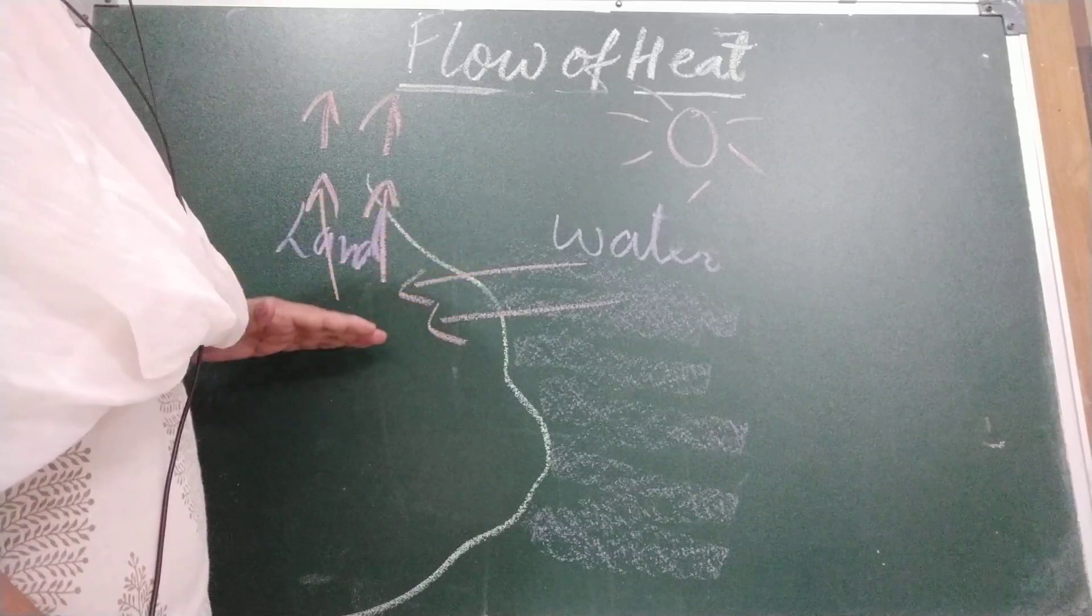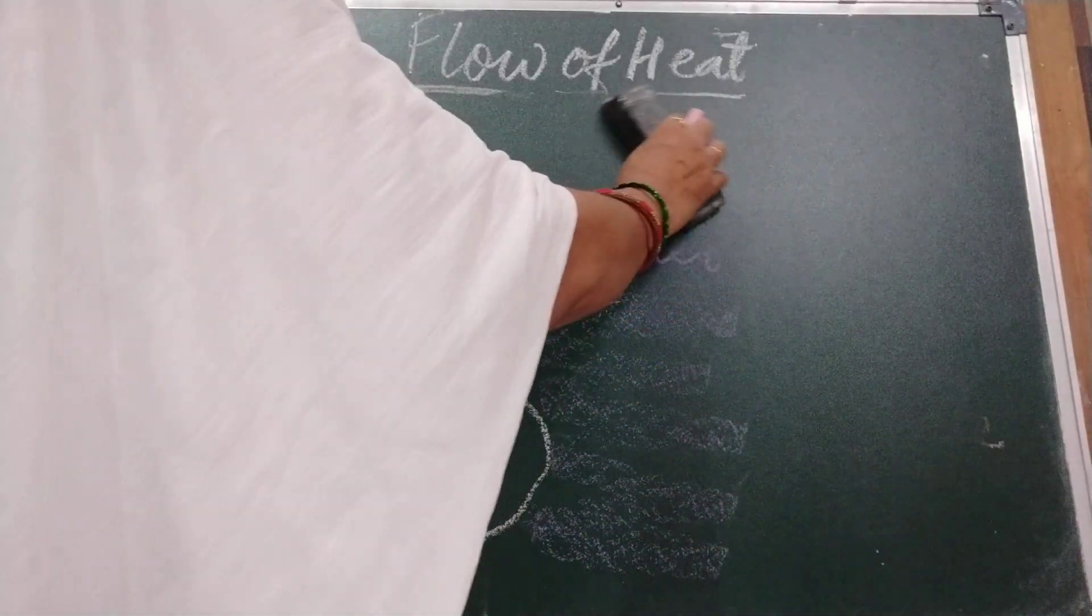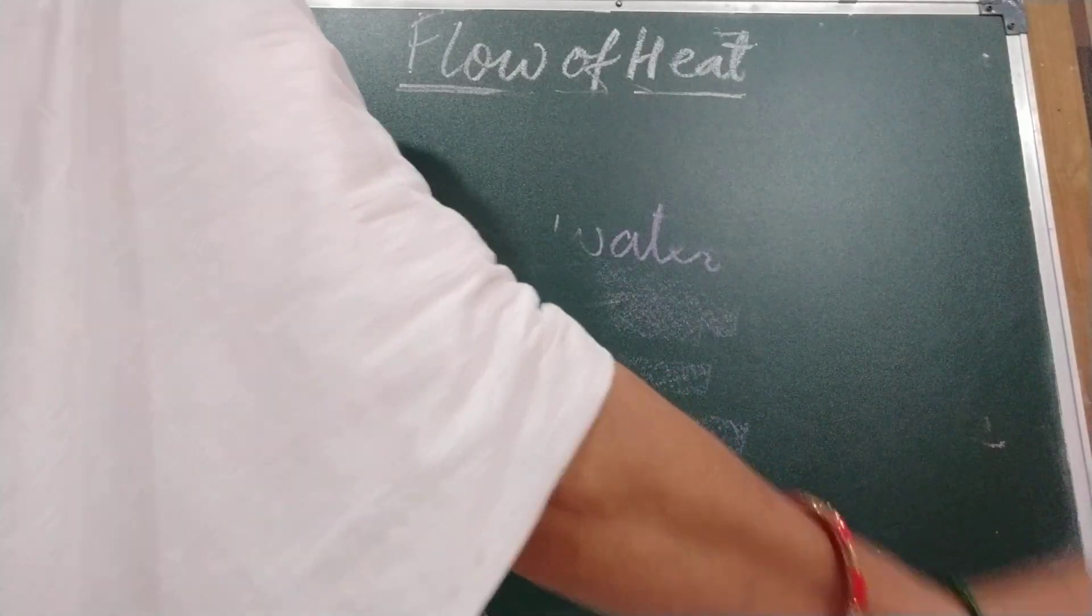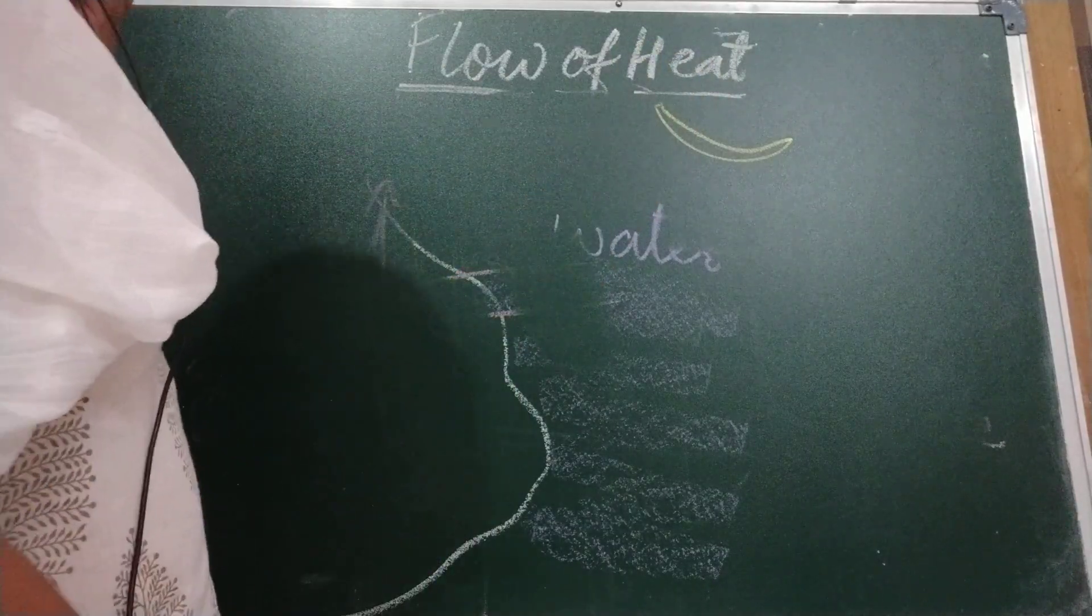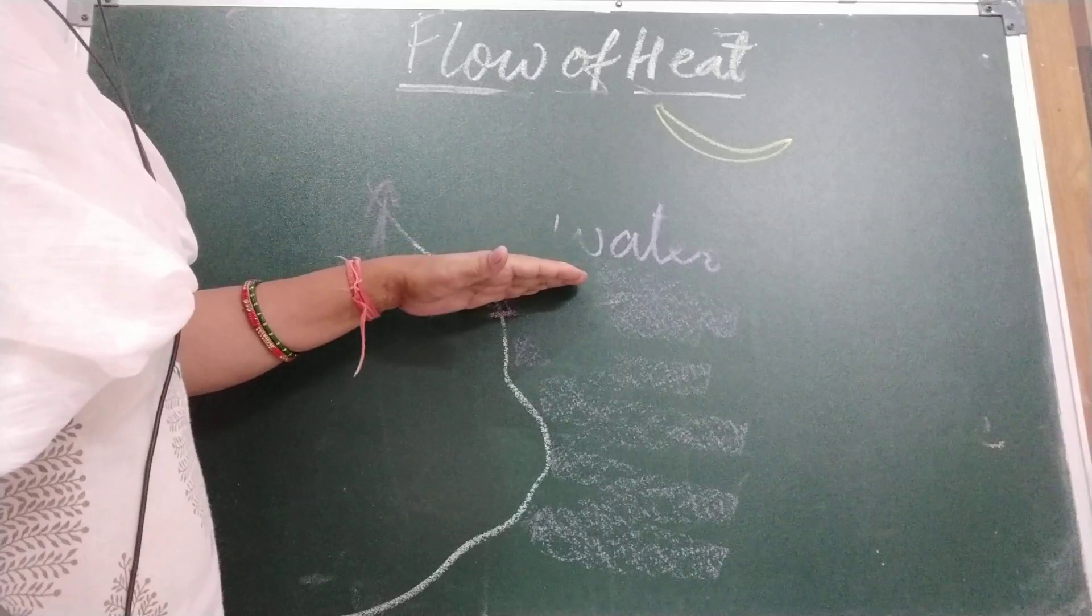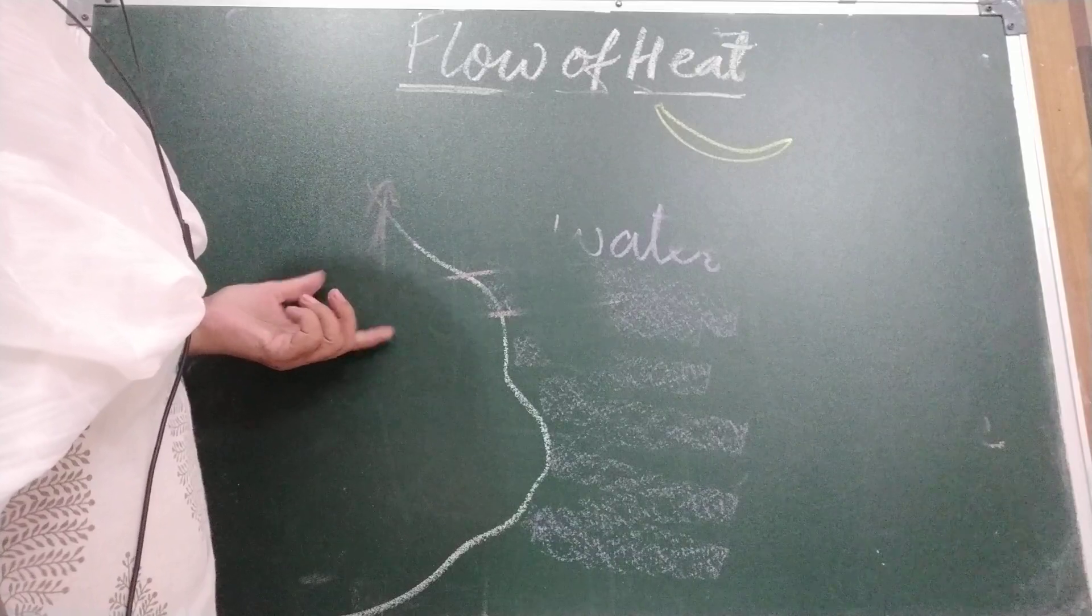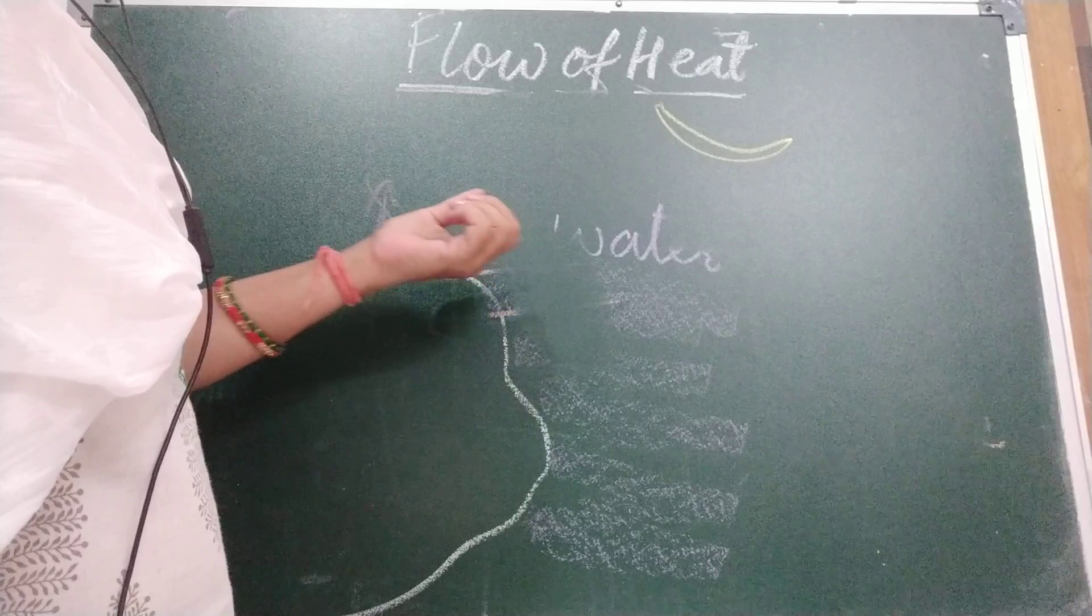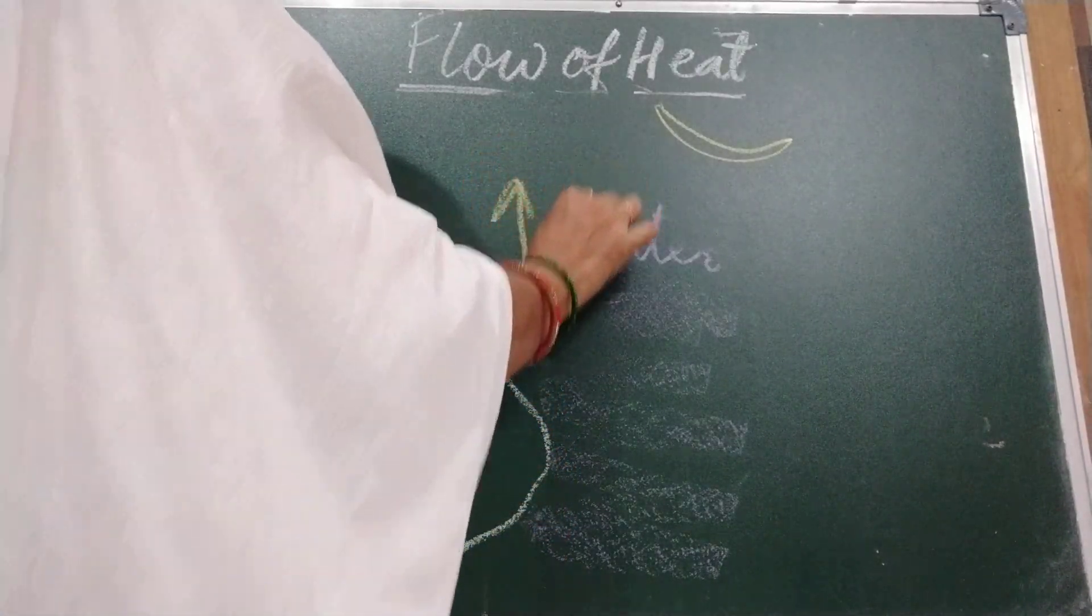Therefore, a sea breeze blows during the day. Now come to the night. When the sun is not there, what happened? Moon is there. During the night, the land loses heat faster than water. As I told you in the beginning, land heats up quickly and cools down quickly. Water takes time to heat up and takes time to cool down. The air above the sea is still hot and it is going up.